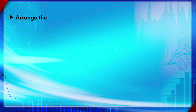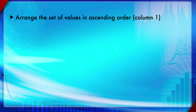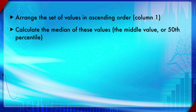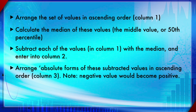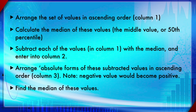To calculate MAD: first arrange the values in ascending order; calculate the median — the middle value, or average of the two middle values if there is no single middle value; subtract each value from the median; take the absolute value of each deviation, converting negatives to positives; sort the absolute deviations in ascending order; and finally take the median of that sorted list. That is the median absolute deviation.